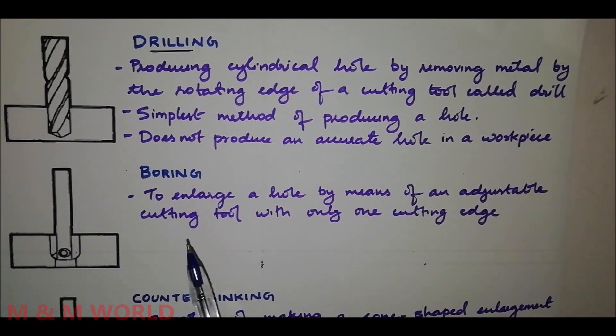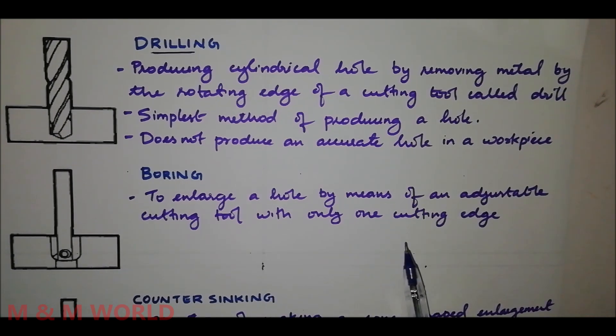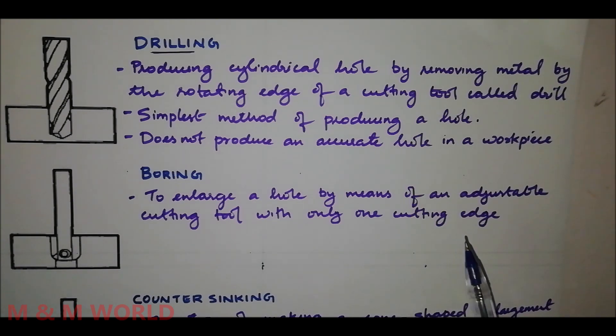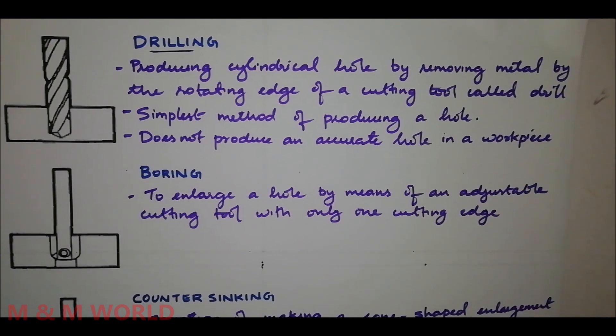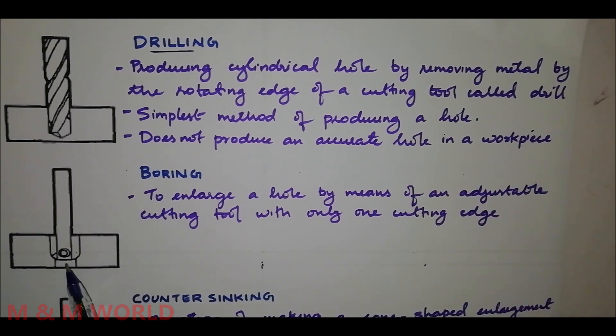The second one is boring. Boring is the operation of enlarging a hole by means of an adjustable cutting tool with only one cutting edge. It is used where suitable size drill is not available or the hole diameter is so large that it cannot be ordinarily drilled, or to machine the internal surface of a hole already produced in casting.